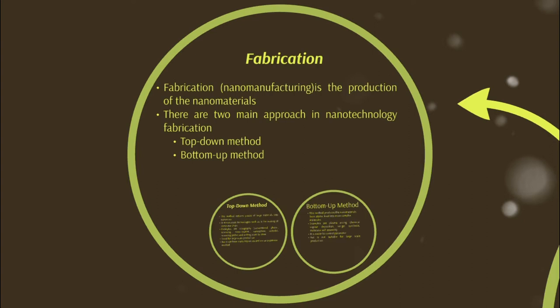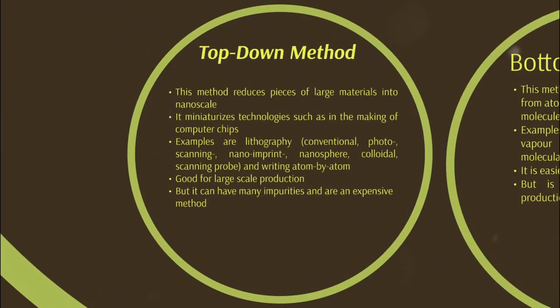Fabrication, or nanomanufacturing, is the production of nanomaterials. There are two main approaches. The first is the top-down method, which reduces pieces of large material into nanoscale. It may utilize technology such as in the making of computer chips. Examples include lithography — conventional, photo scanning, nano imprint, nanosphere, colloidal, scanning probe, and writing atom by atom. The top-down method is good for large-scale production but can have many impurities and is expensive.